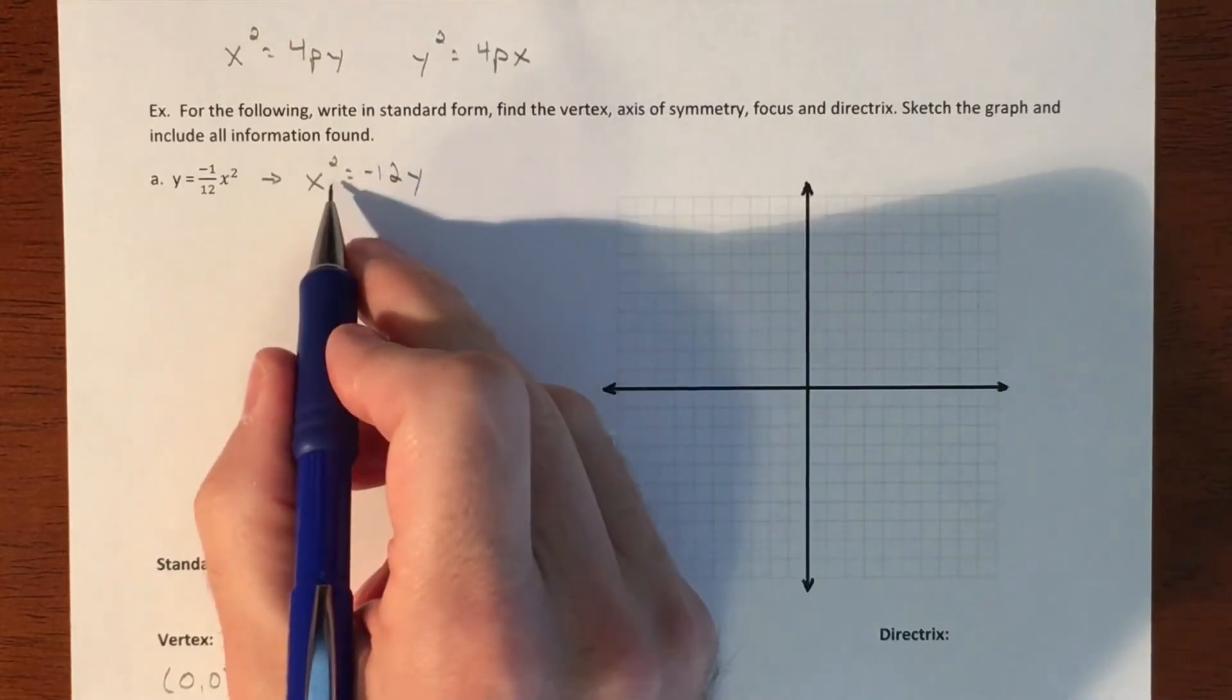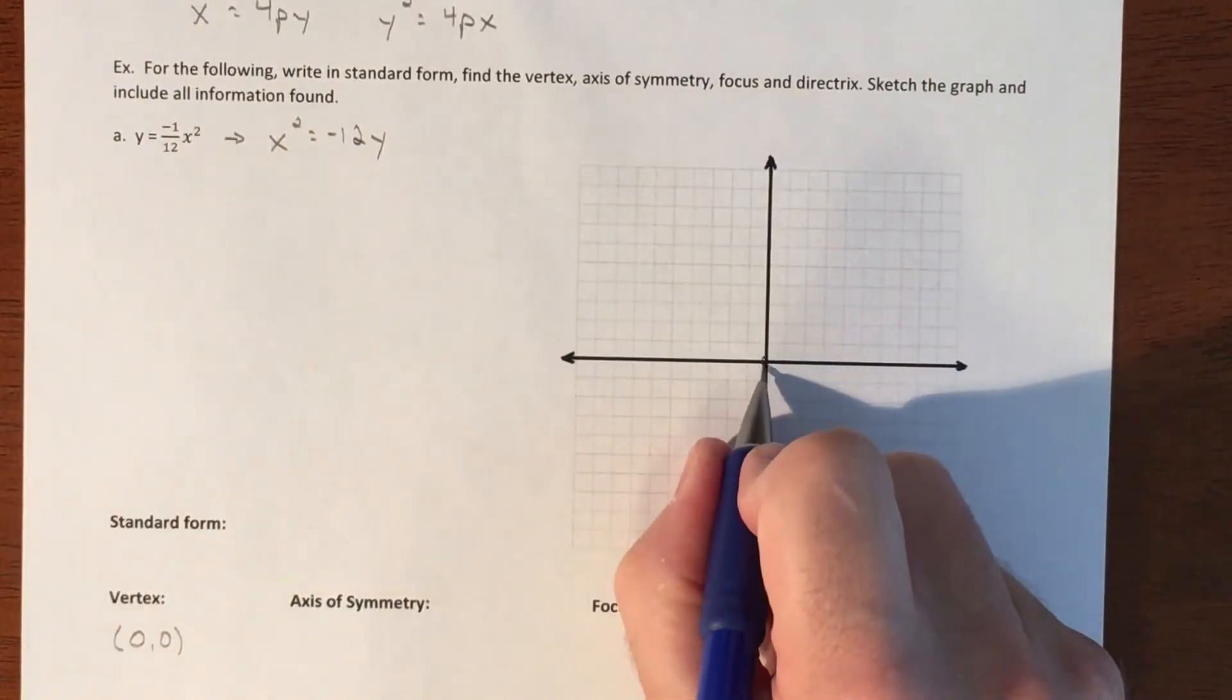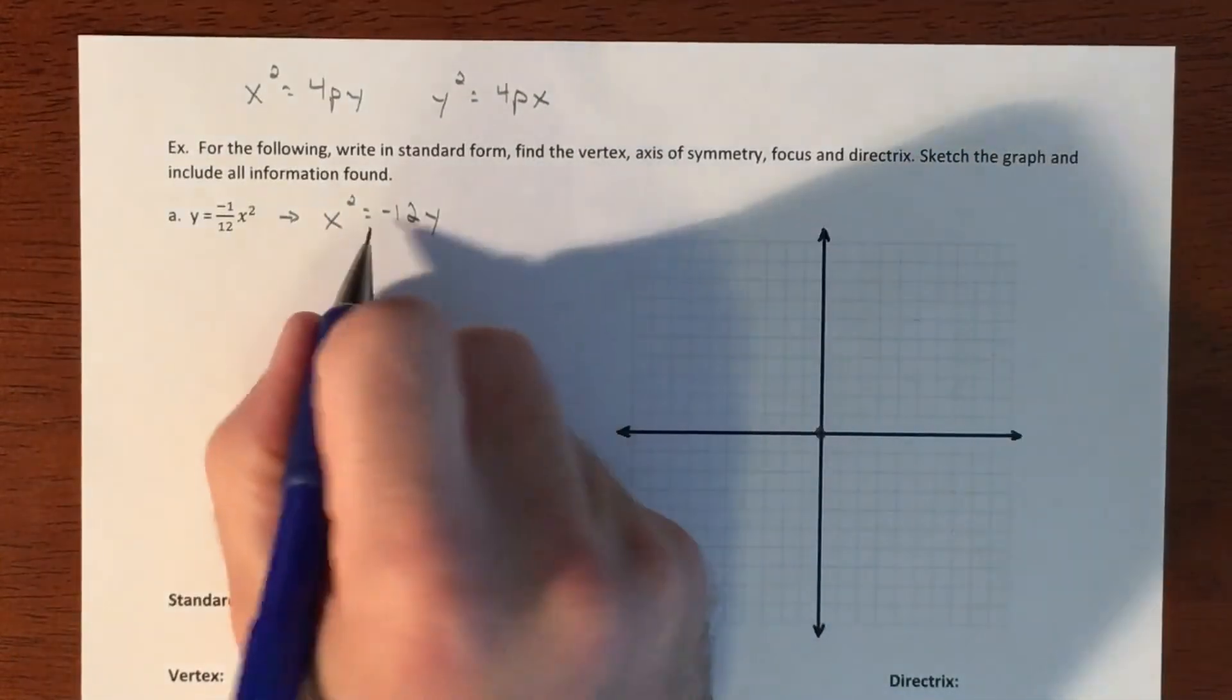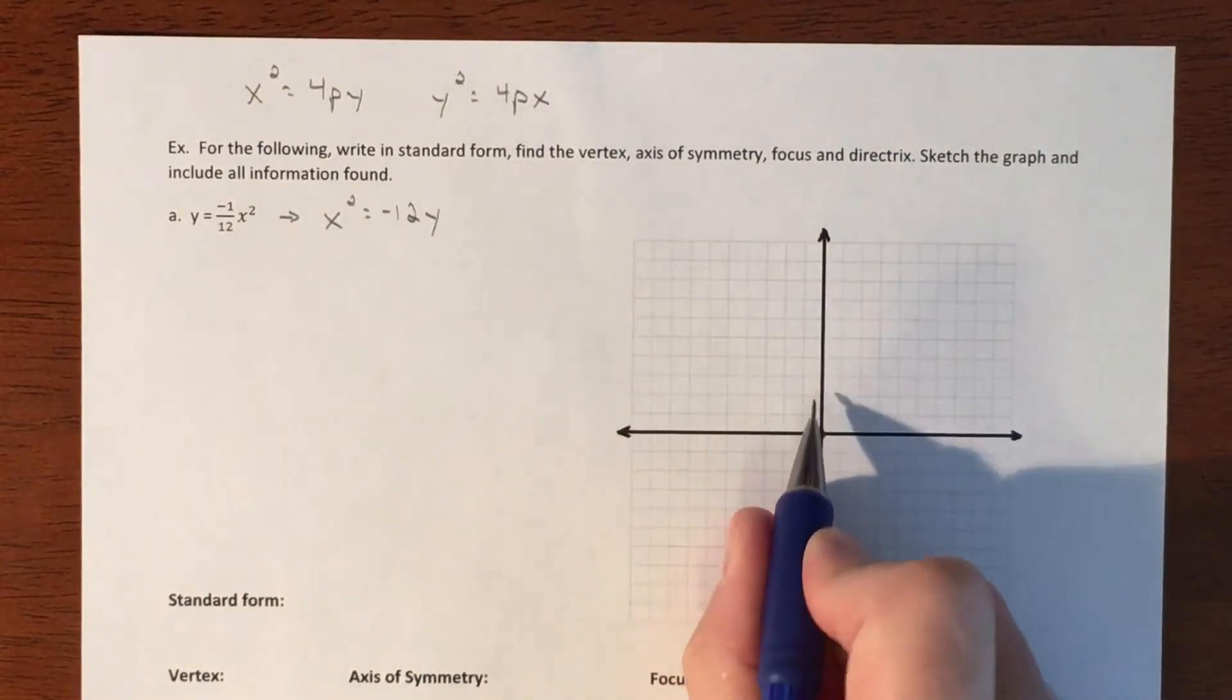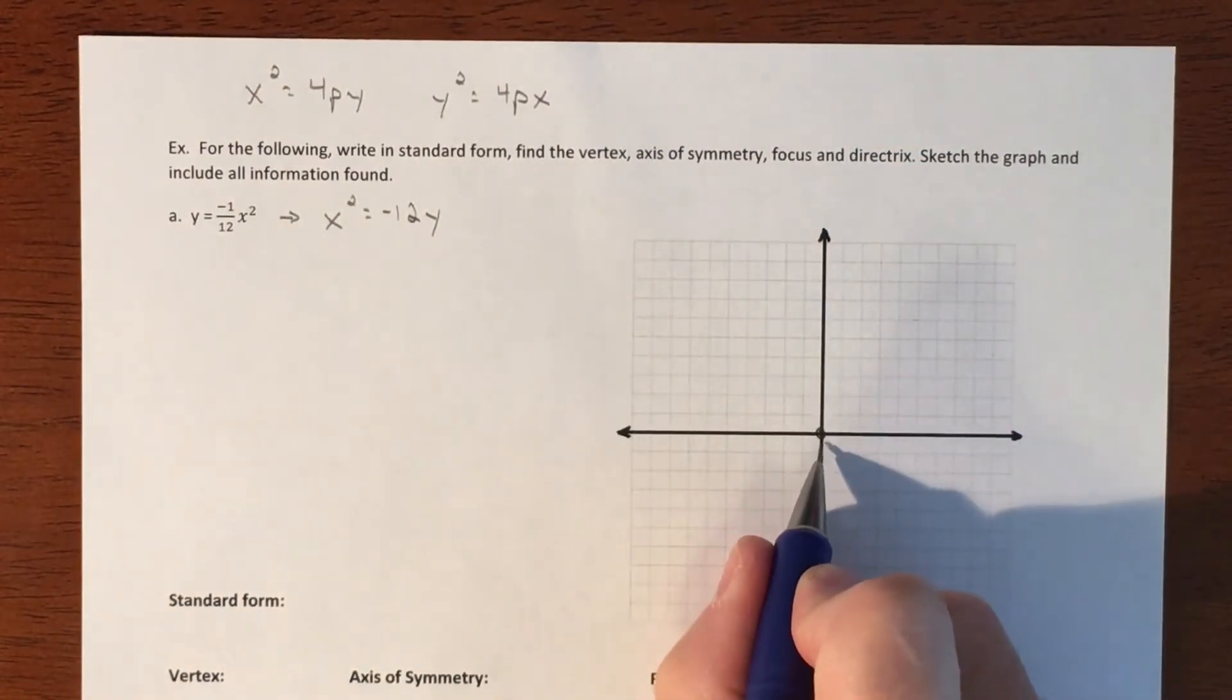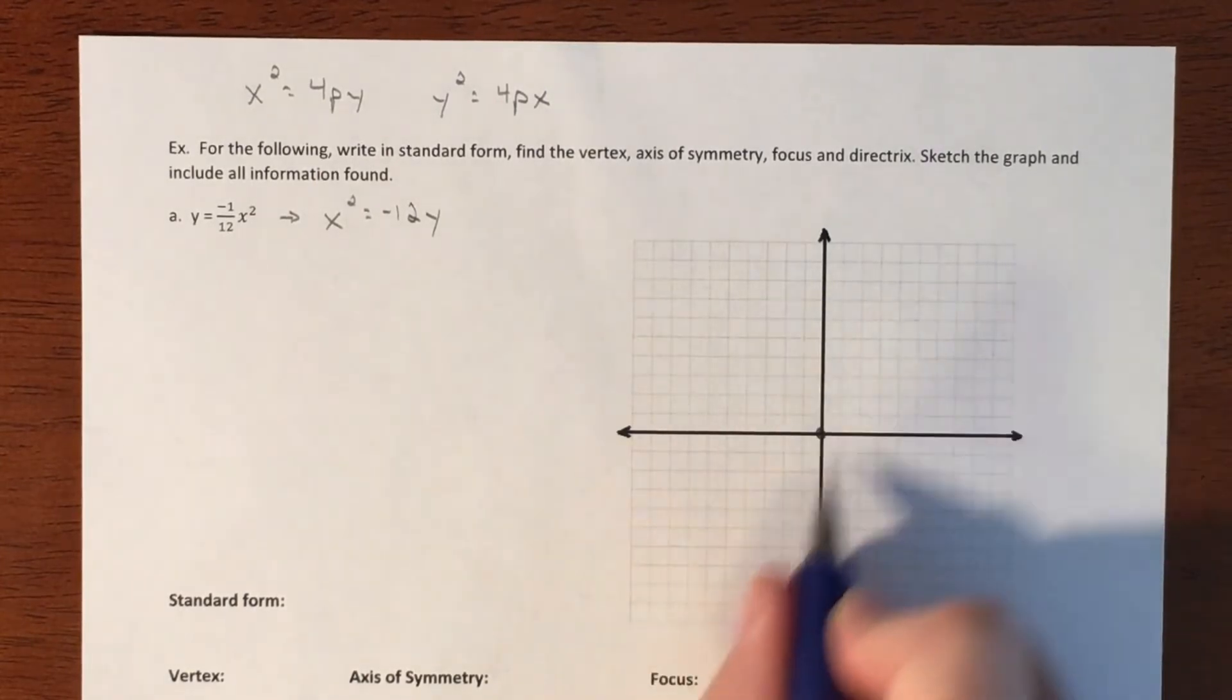That'll happen in another video. But right now, our vertex is just going to be at (0, 0). So our graph is this. And then the next piece of this is we need to figure out our p. Because our p value, if it's positive, we're going to go up whatever distance that is. If it's negative, we're going to go down, and that's going to pretty much direct us to what direction this thing is going.